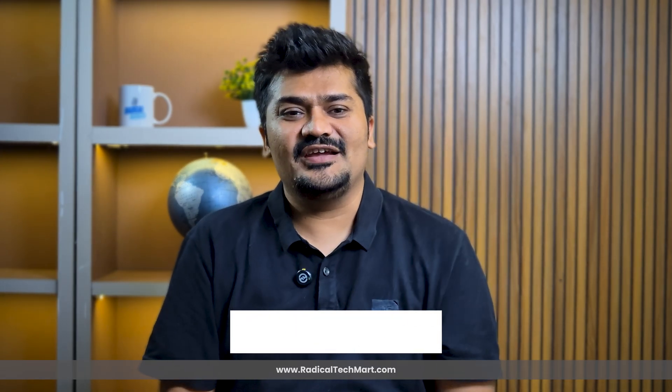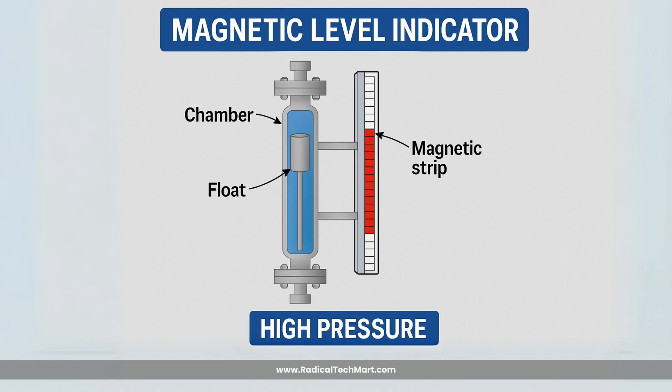The second part covers the types of level indicators. Here are the most common types. First is the magnetic level indicator. It uses a float with a magnet inside a chamber, and an external indicator moves with the float. It is great for hazardous or high-pressure applications.